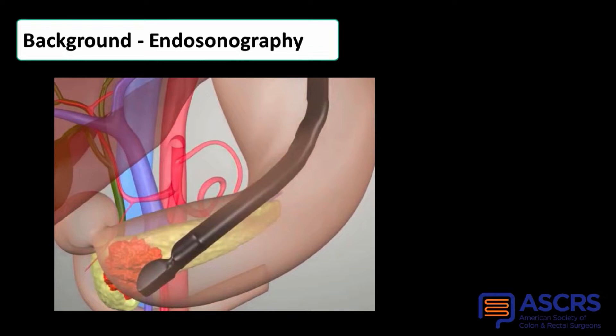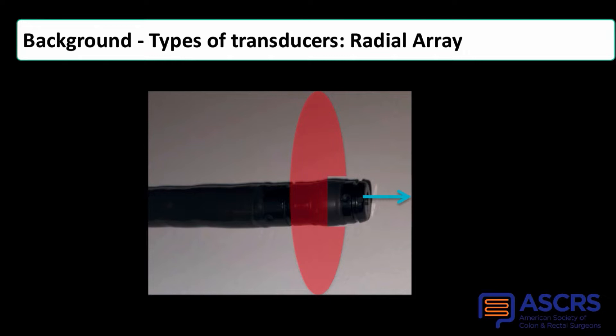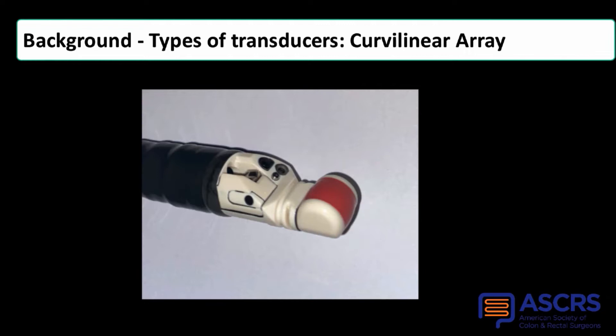Endoscopic ultrasound, also known as endosonography, is the use of ultrasound technology inside the human body. There are two types of transducers: radial array, where the scanning area is a circle around the tip of the scope — however, biopsy devices shown as the blue arrow cannot be seen by the ultrasound — and curvilinear array transducers, where the scanning area is a sector at the tip of the probe, where echogenic devices such as biopsy needles can be seen sonographically.